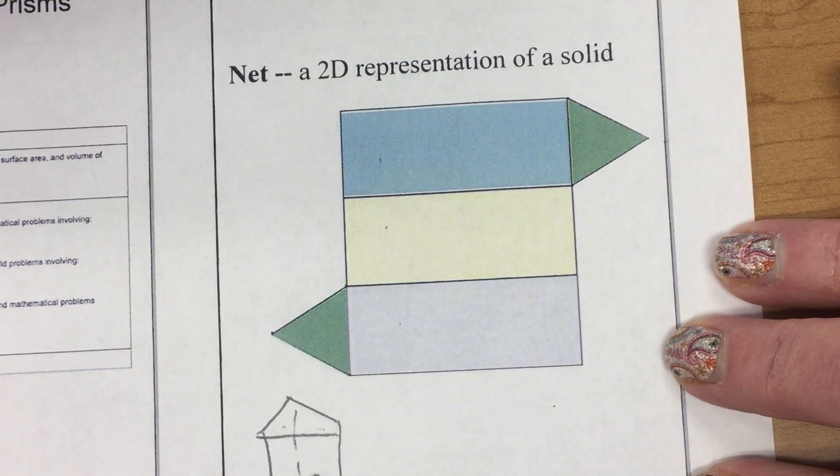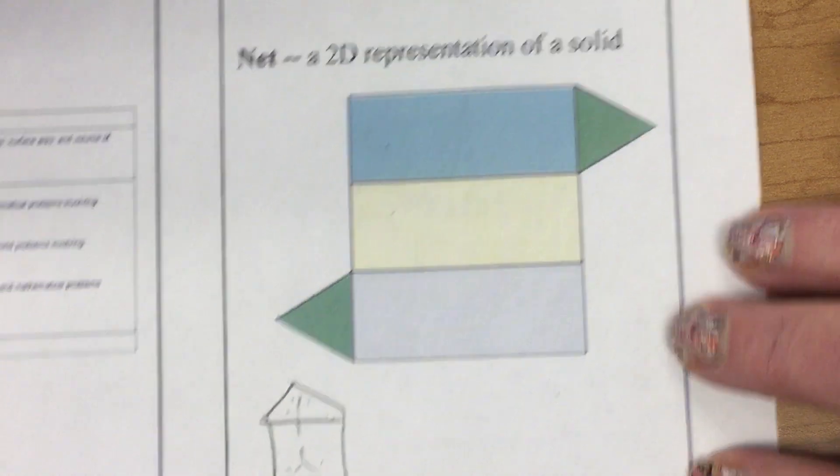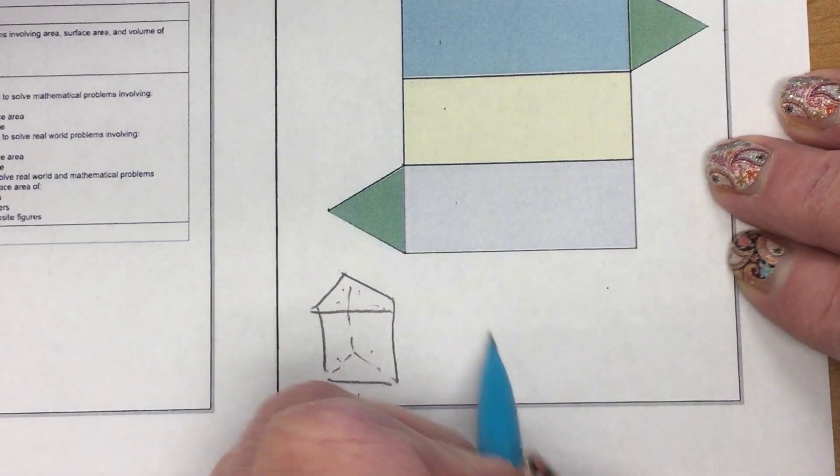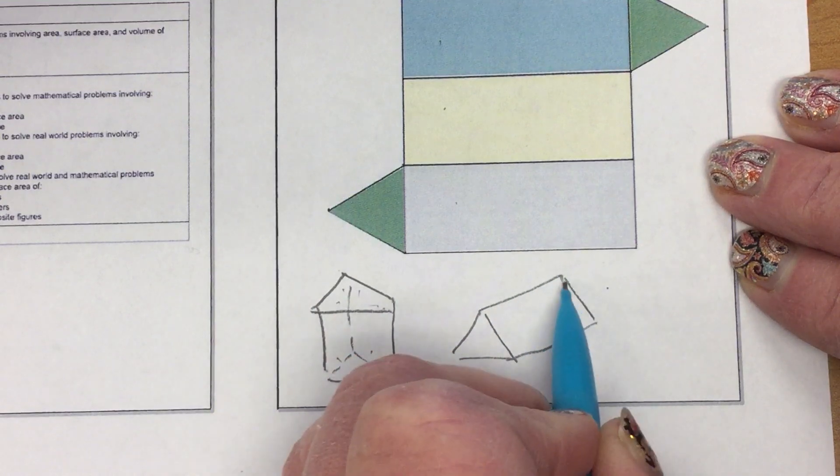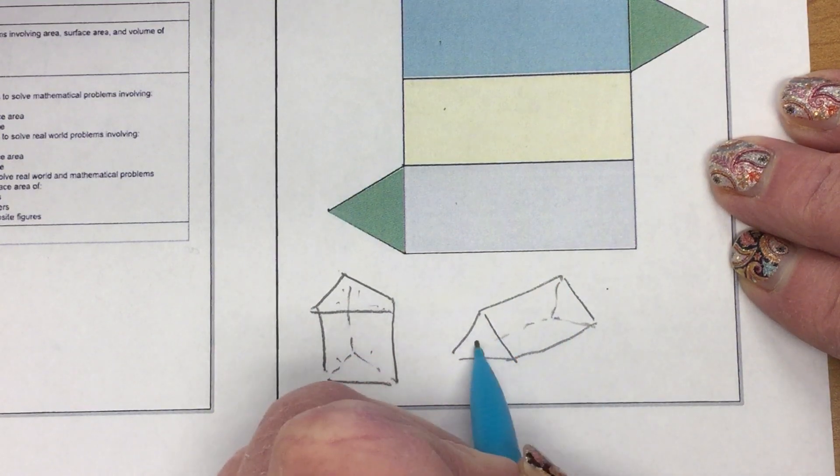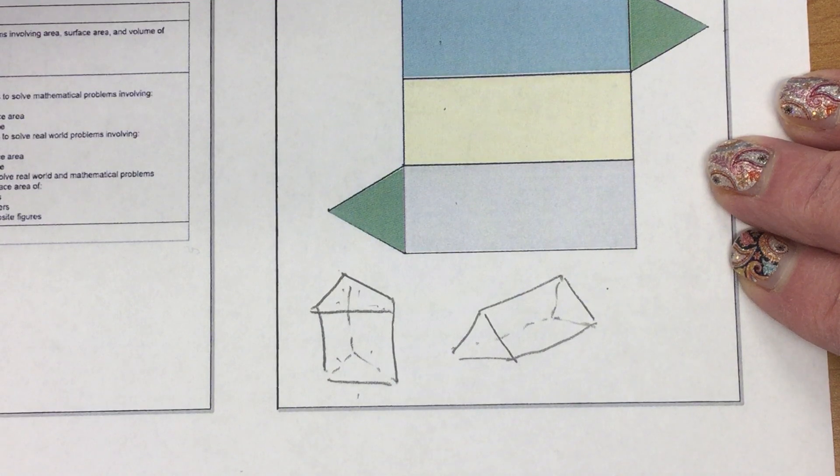With three rectangular pieces and two triangles, top and bottom. Or it might look like a tent if I laid it flat this way. But either way, it's a triangular prism.